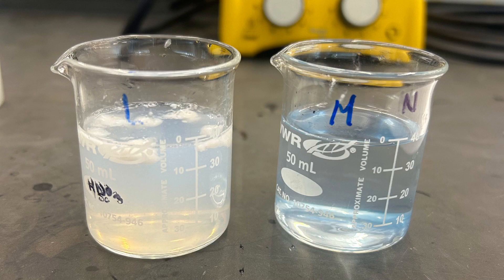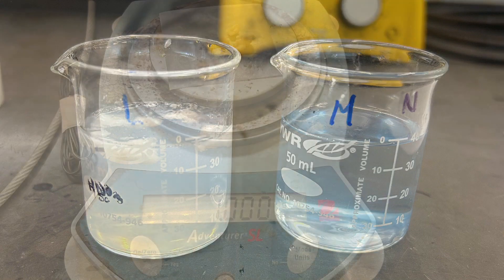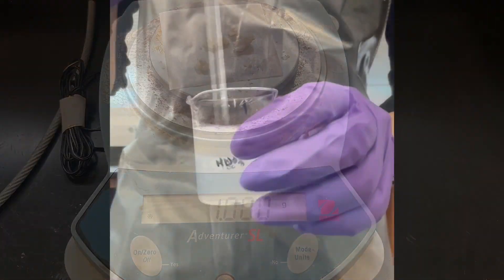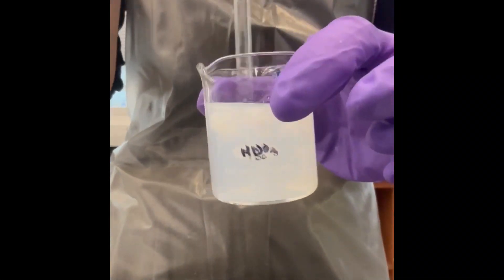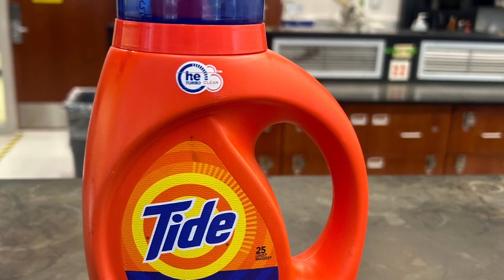Lastly, for Part E, we will determine the properties of soaps and detergents using a pH and hard water test. Using two 50 milliliter beakers, prepare two solutions. One with one gram of sodium soap you prepared in Part C dissolved in 40 milliliters of DI water and one with one milliliter of commercial detergent in 40 milliliters of DI water.